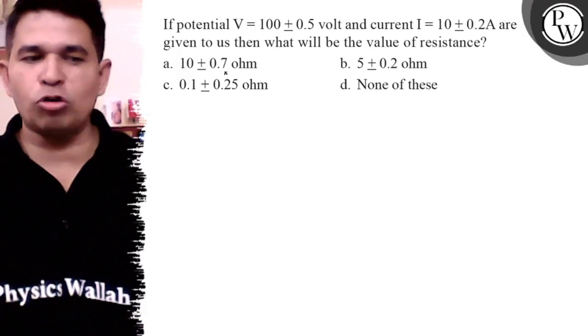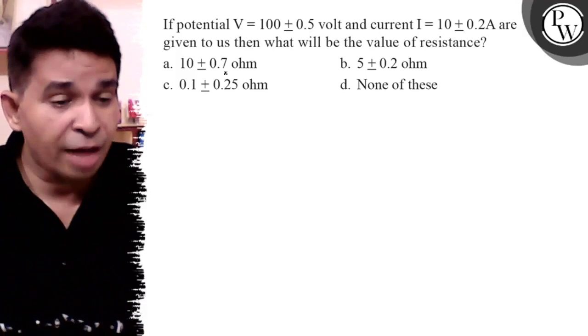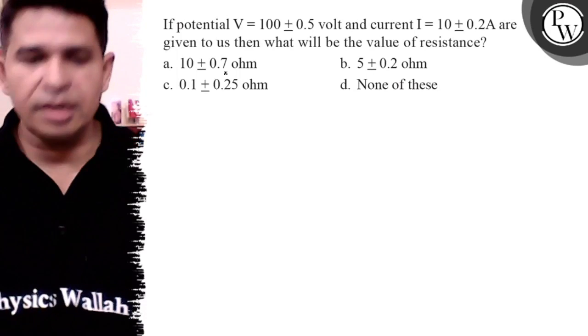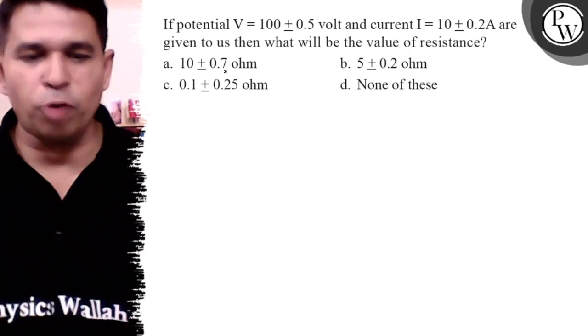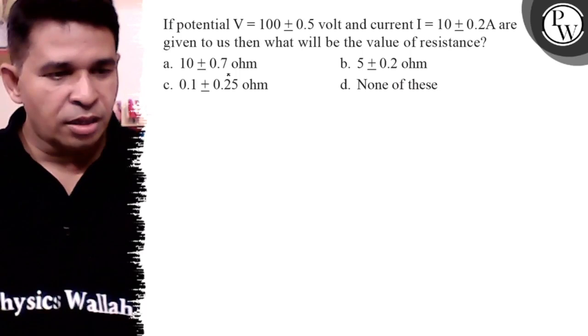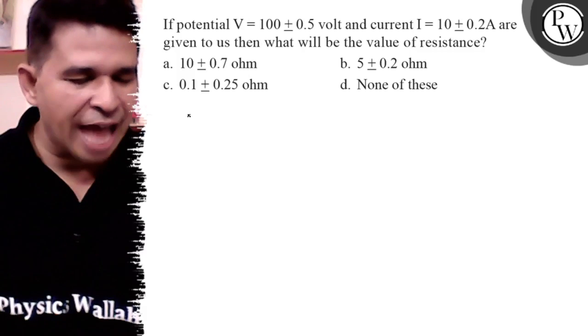Hello Bakchon, let us see this question. If potential V = 100 ± 0.5 volt and current I = 10 ± 0.2 ampere are given to us, then what will be the value of resistance?